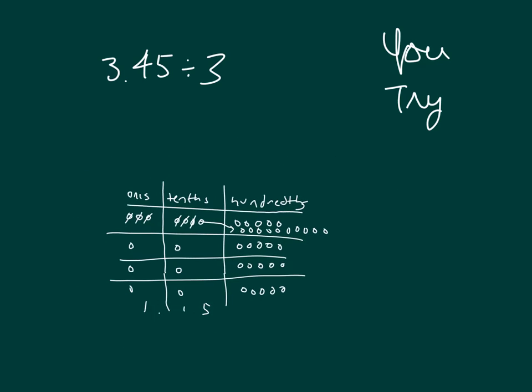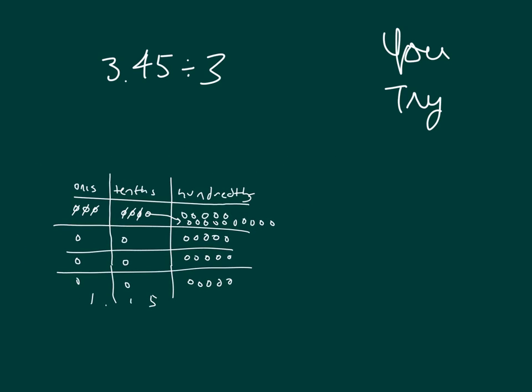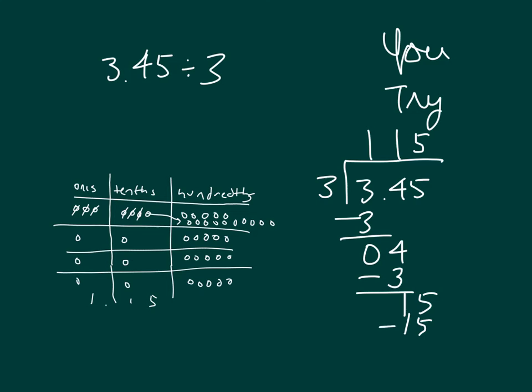Let's show our written method. 3 goes into 3 one whole time. 1 times 3 is 3. 3 minus 3 is 0. Bring down the 4. 4 divided by 3 is 1. 1 times 3 is 3. 4 minus 3 is 1. Bring down the 5. 15 divided by 3 is 5. And the rest of our work.